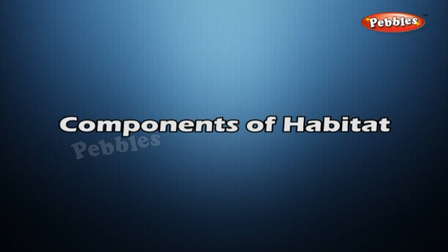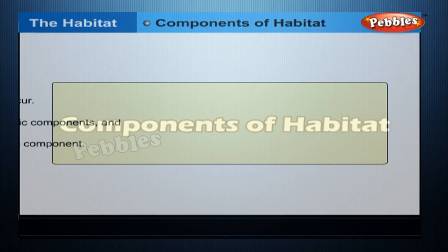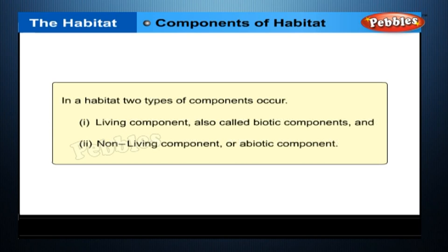In a habitat, two types of components occur. These are living components, also called biotic components, and non-living components, also called abiotic components.